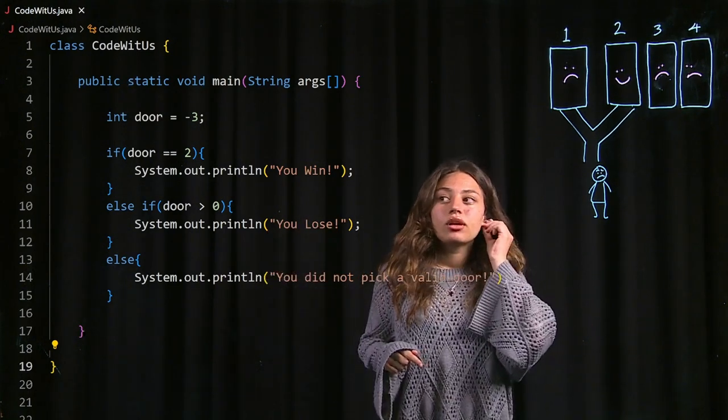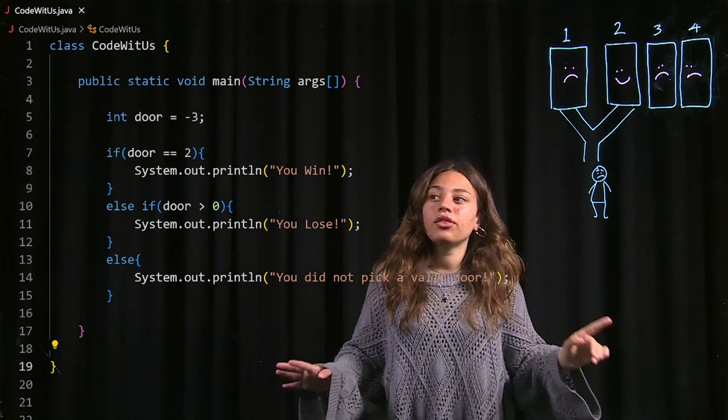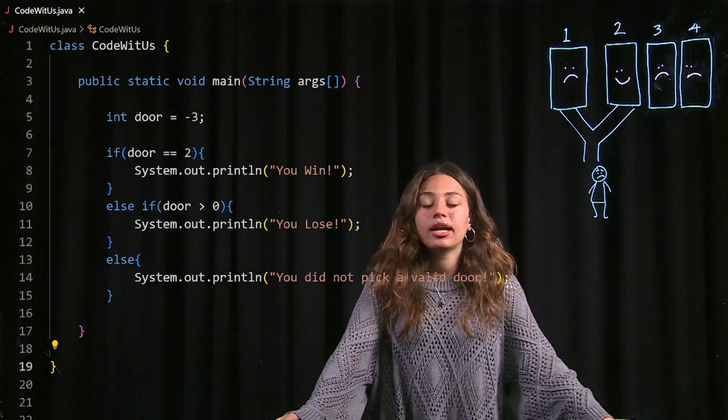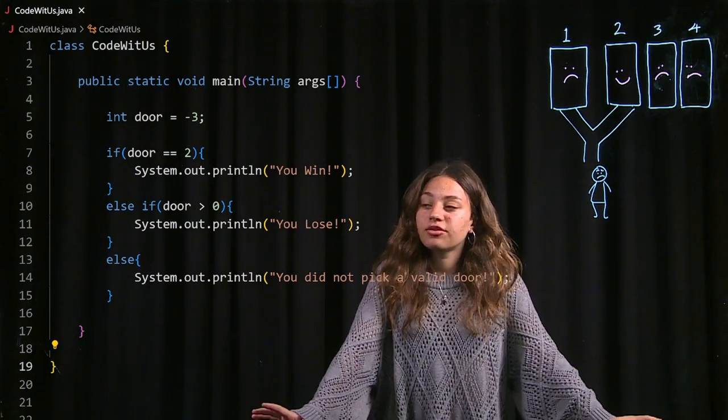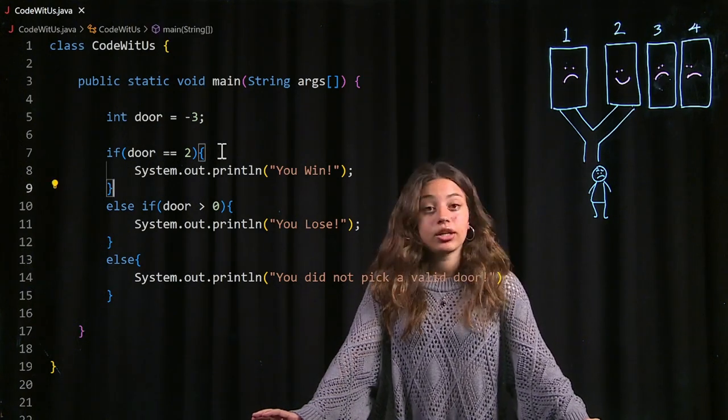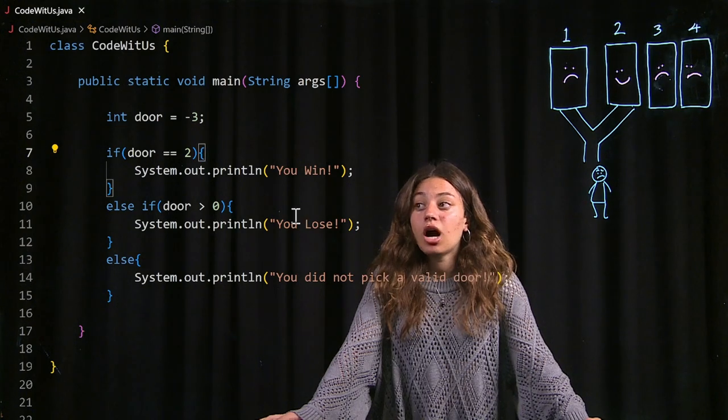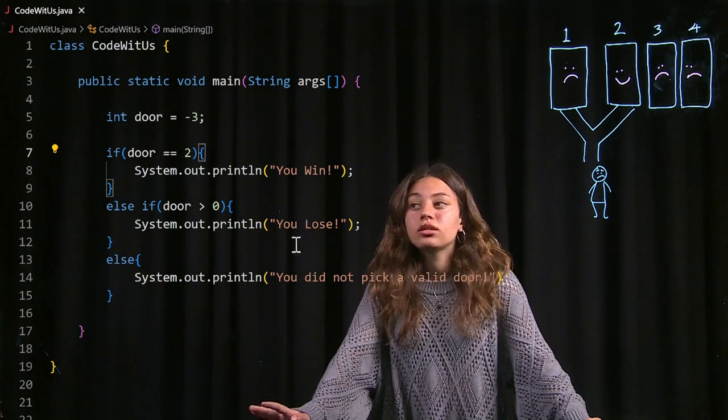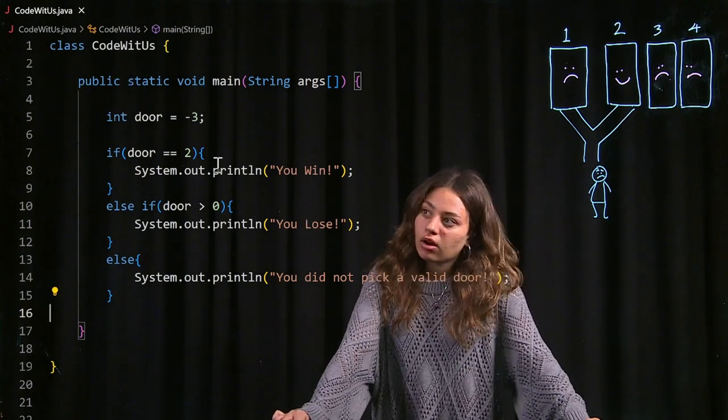So this is almost done. There's just one thing that I need to fix about it and that is the way this code runs is it first checks that the door I picked is a winning door. Then it's going to check that the door I picked is a positive door and if it's not a positive door or a winning door it means I didn't pick a valid door. This works fine and all, however,